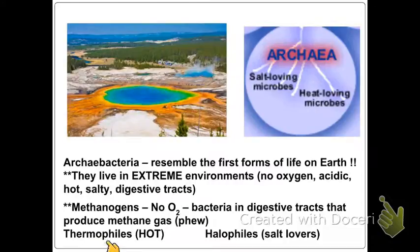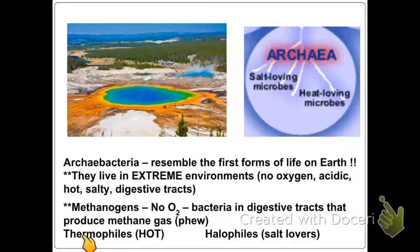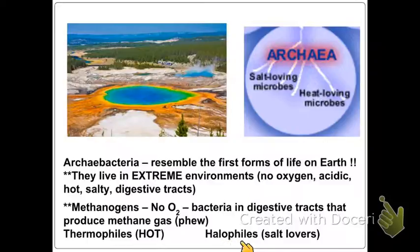Thermophiles are heat-loving organisms — anything with '-phile' next to it means loving. Thermo means heat, so thermophile means heat-loving. Halophiles are salt-loving organisms — 'halo' means salt.